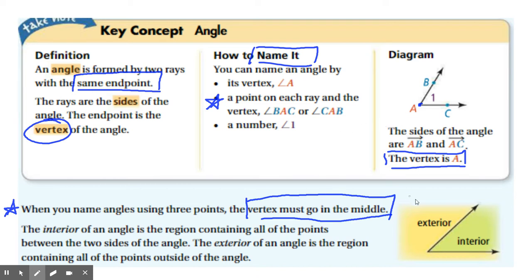Alright, last two vocab words here are interior and exterior. So the space in between your two sides is called the interior. The space outside is called the exterior.